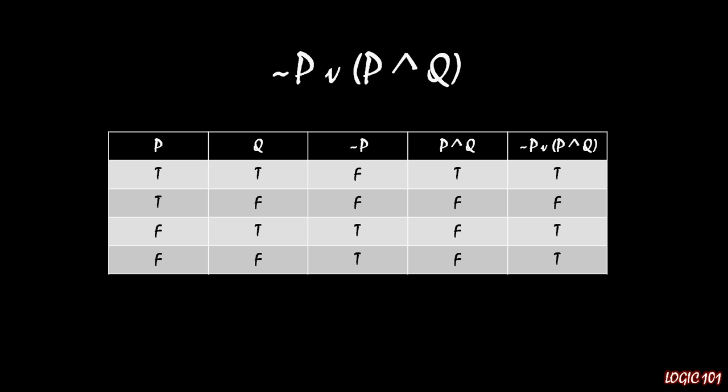we have P and Q being true. So that fulfills the fifth column as being true, because the right side of the disjunction is true. In the second row, both not P and P and Q are false, and so that means the disjunction is false.